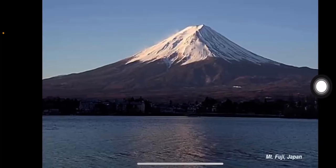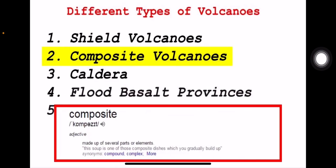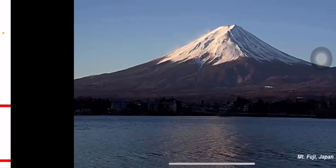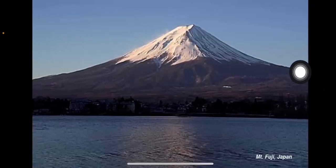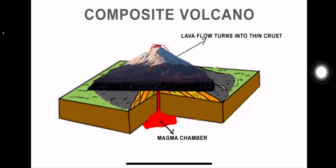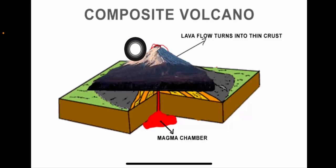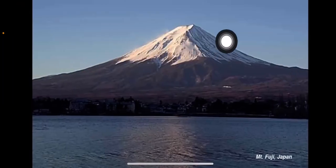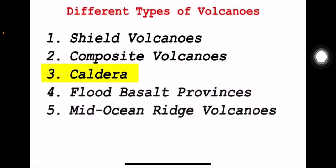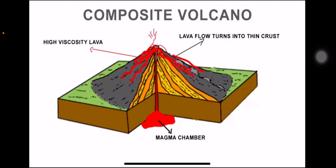Next is composite volcano. Composite means it is made up of several parts or elements. In a composite volcano, lava flow turns into a thin crust and the vent is very narrow. The thickness of the magma is high, which is why layers are formed. There are many materials inside, and a solid layer forms at the bottom.